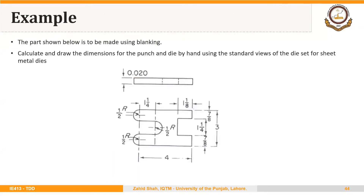Let's take the same part used earlier for calculating scrap and utilization, which is to be made using blanking. We will calculate and draw the dimensions of the punch and die using the standard views of the die set for sheet metal dies. Since it is a blanking operation, the dimensions shown are the size of the blanking die — the opening in the die block will have the same dimensions.